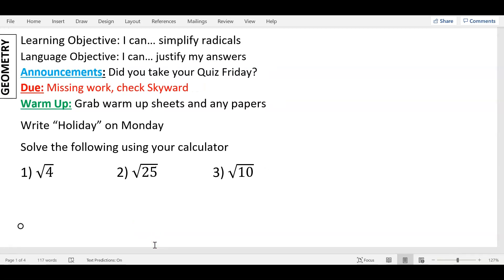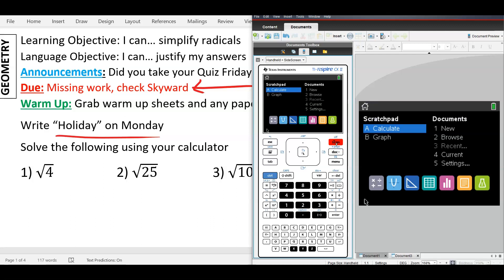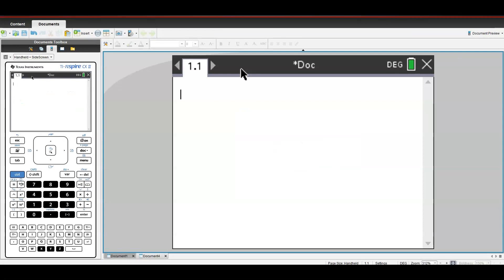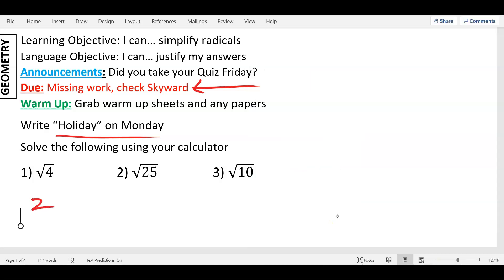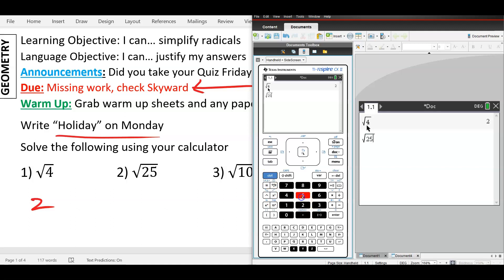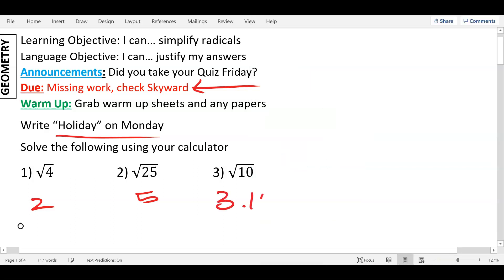All right, so the warm-up says again any missing work you have, you can check Skyward, make sure you turn that in. I do have some papers to grade. You wrote holiday on Monday, okay. So square root of four, if you tap it in your calculator it'll tell you what the square root of four is. Now if you don't know where the square root button is, it's right here next to the number four, the x squared button. You've got to press control x squared. Square root of four gives you two. Square root 25 is five, and then square root of ten, this one is not going to be a whole number, 3.16228. I like to round two decimal points, so 3.16 works for me. Everyone know where the square root button is on your calculator?